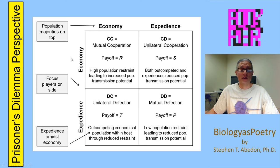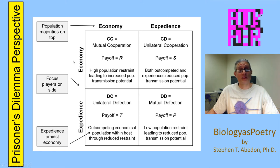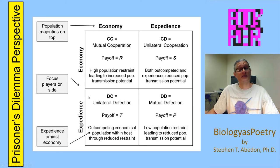Now, note that instead of using cooperation and defection, we've replaced those terms with economy and expediency. Economy corresponds to cooperation, and expediency corresponds to defection.